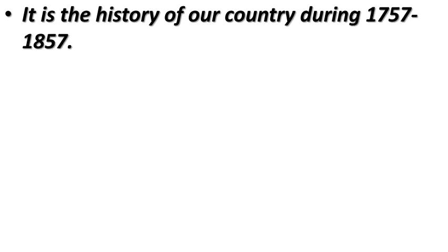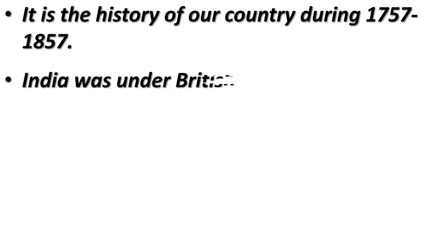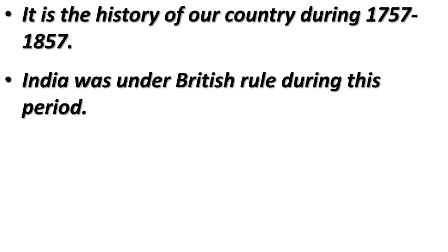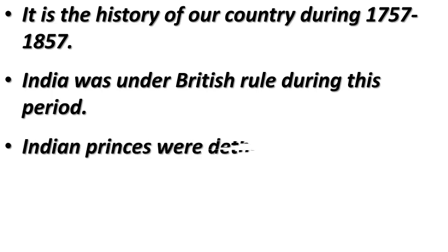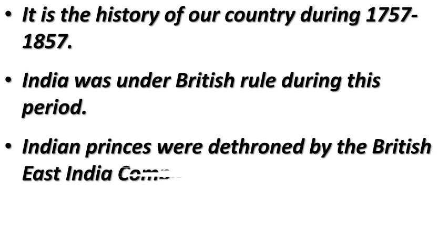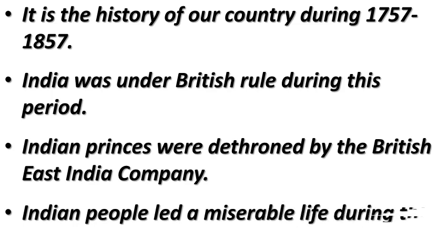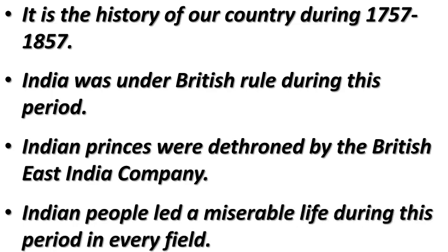Let us see the key points of the chapter. Number one: it is the history of our country during 1757 to 1857. Number two: India was under British rule during this period. Number three: Indian princes were dethroned by the British East India Company. Number four: Indian people led a miserable life during this period in every field.